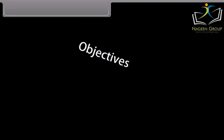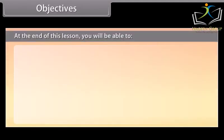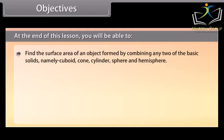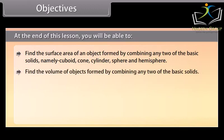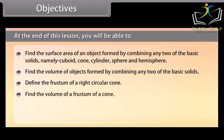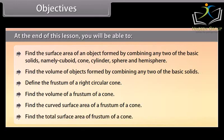Objectives: At the end of this lesson, you'll be able to find the surface area of an object formed by combining any two of the basic solids — namely cuboid, cone, cylinder, sphere, and hemisphere. Find the volume of objects formed by combining any two of the basic solids. Define the frustum of a right circular cone. Find the volume, curved surface area, and total surface area of a frustum of a cone.